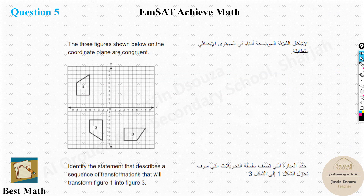Question 5 is about rotation or translation. Three figures shown on the coordinate plane are congruent — they have just been transformed. Since they are congruent, it's either rotation, translation, or reflection. We need to identify the sequence of transformation from figure 1 to figure 3.